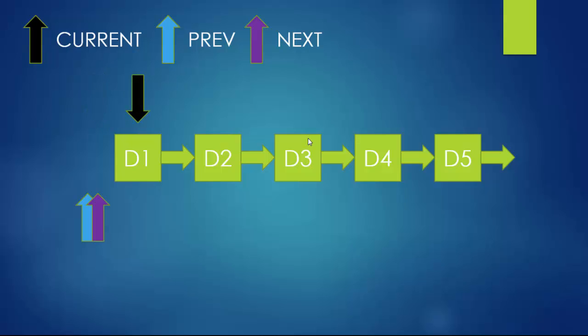Then you set current equal to the head pointer, so current points to the first element in the linked list. Next, you assign current->next to the variable next — so since current is pointing to d1 and d2 comes after d1, next is now pointing to d2. You can see next is shown in purple. Prev was initialized to null, so prev is pointing to null.